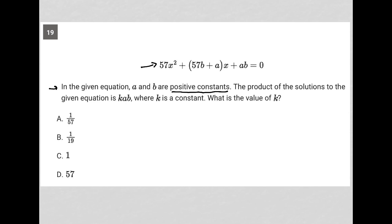The product of the solutions to the given equation is KAB. So once we solve this, we'll have two solutions actually. And then we multiply those two solutions together, it should be equal to KAB, where K is a constant. And then we're asked to find what is the value of K.